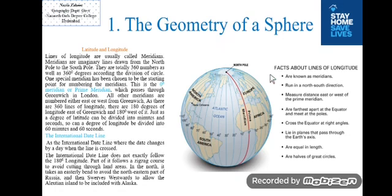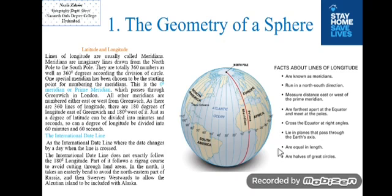Some facts about lines of longitude: they are known as meridians; they run in a North-South direction; they measure distance east or west of the prime meridian; they are furthest apart at the equator and meet at the poles; they cross the equator at right angles; they lie in planes that pass through the Earth's axis; and they are equal in length, being halves of great circles.